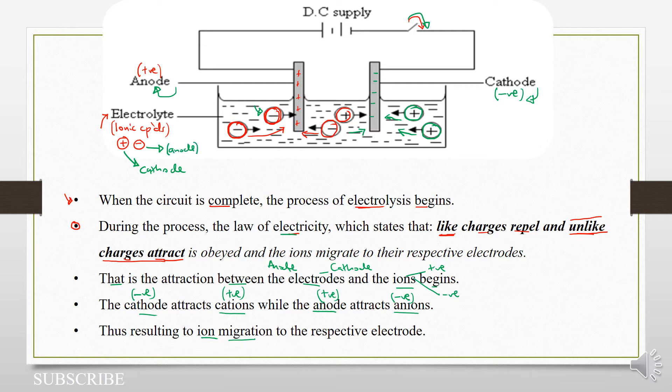So now we are going to look at some examples later on and see what we mean by this ionic theory using specific electrolytes, say sodium chloride solution, say sulfuric acid, and so on.